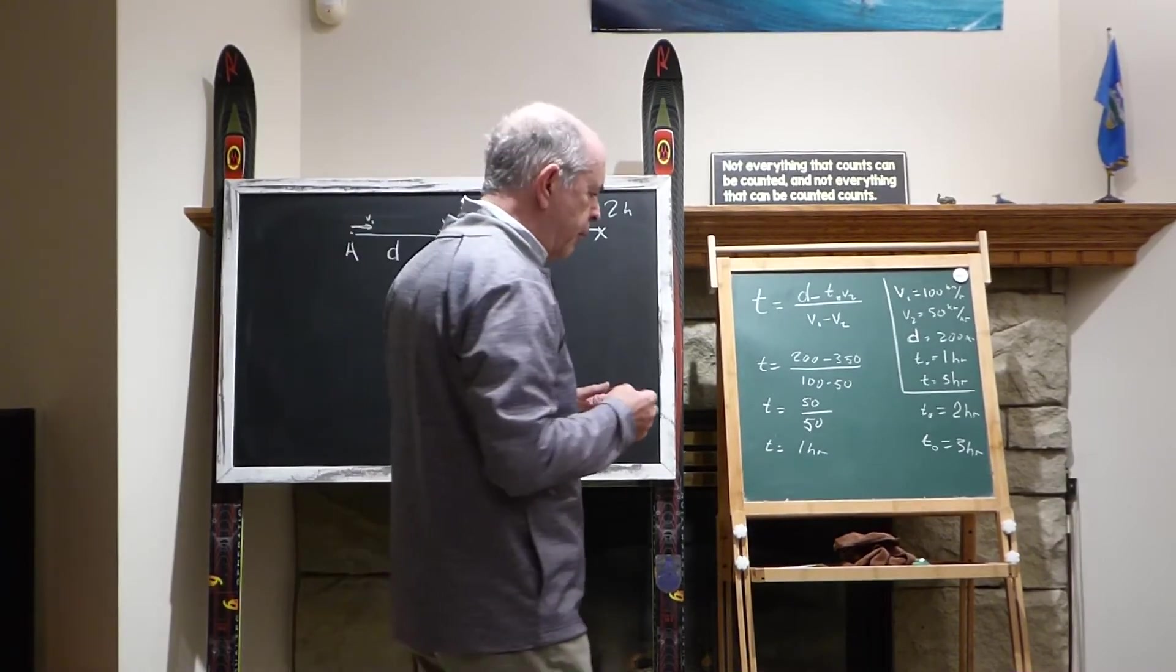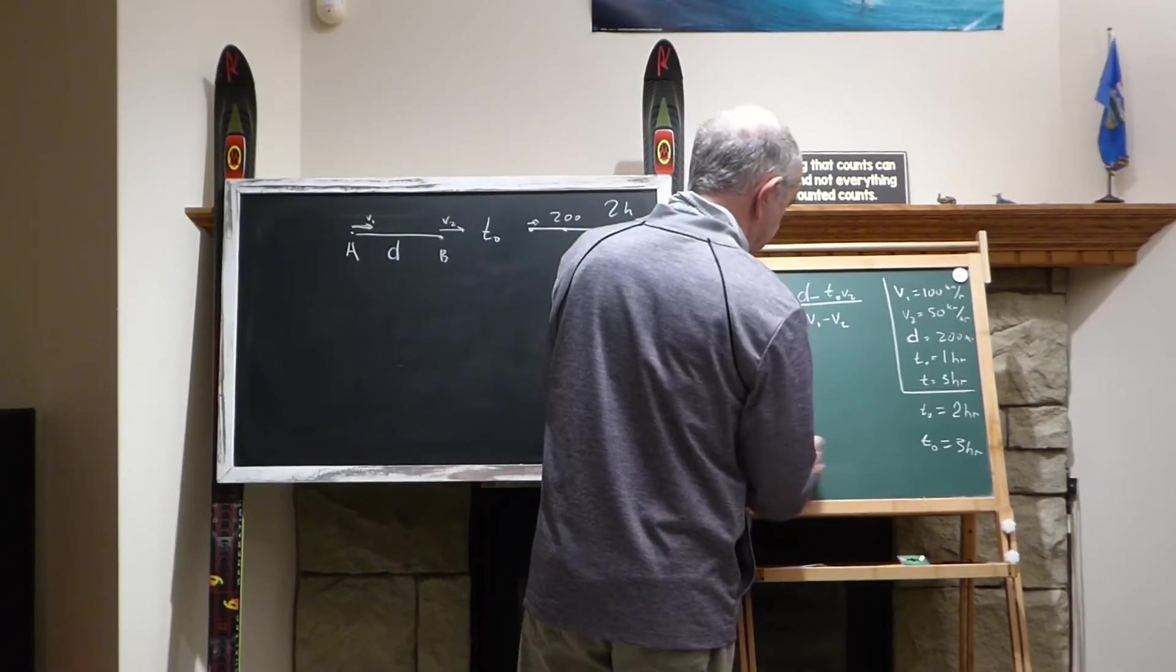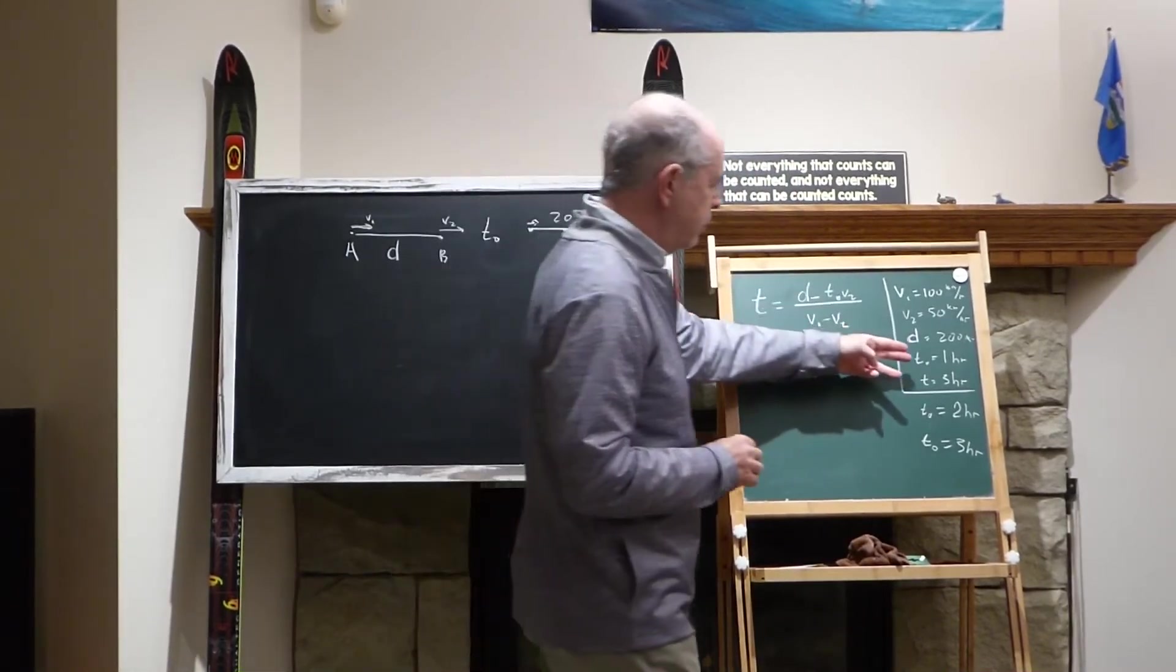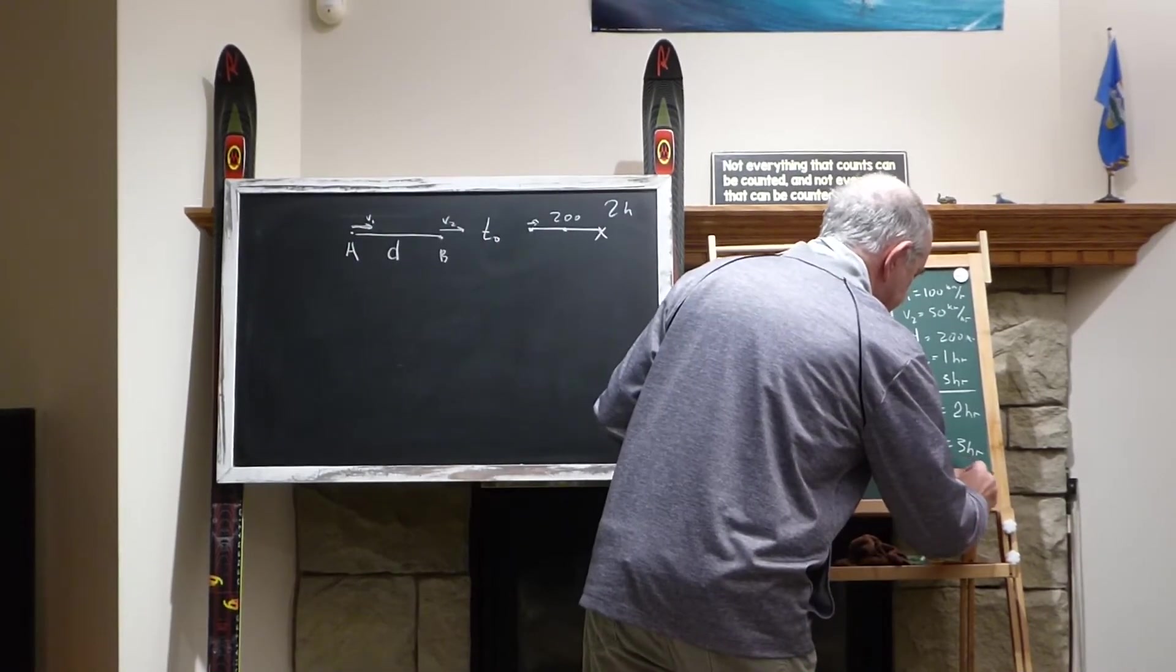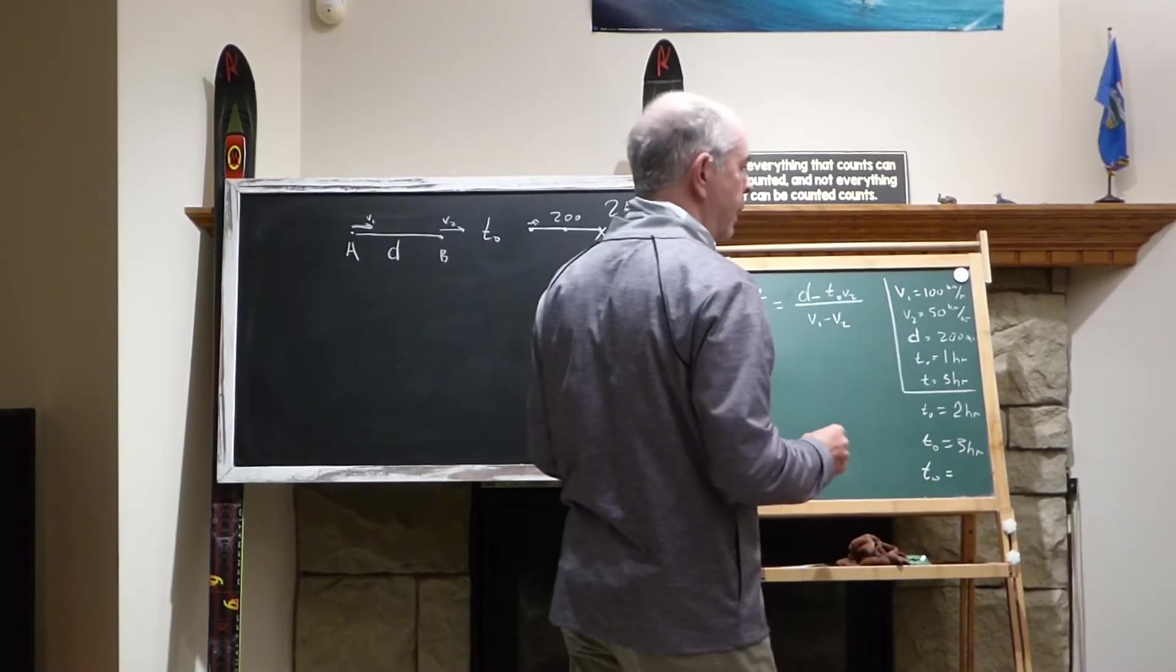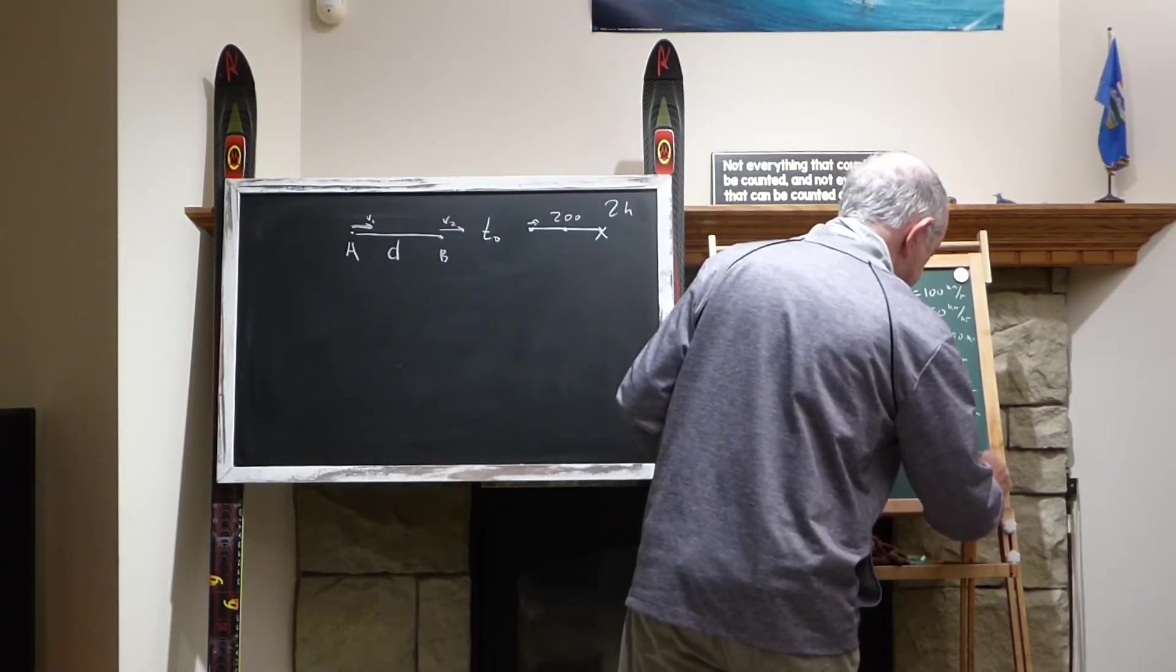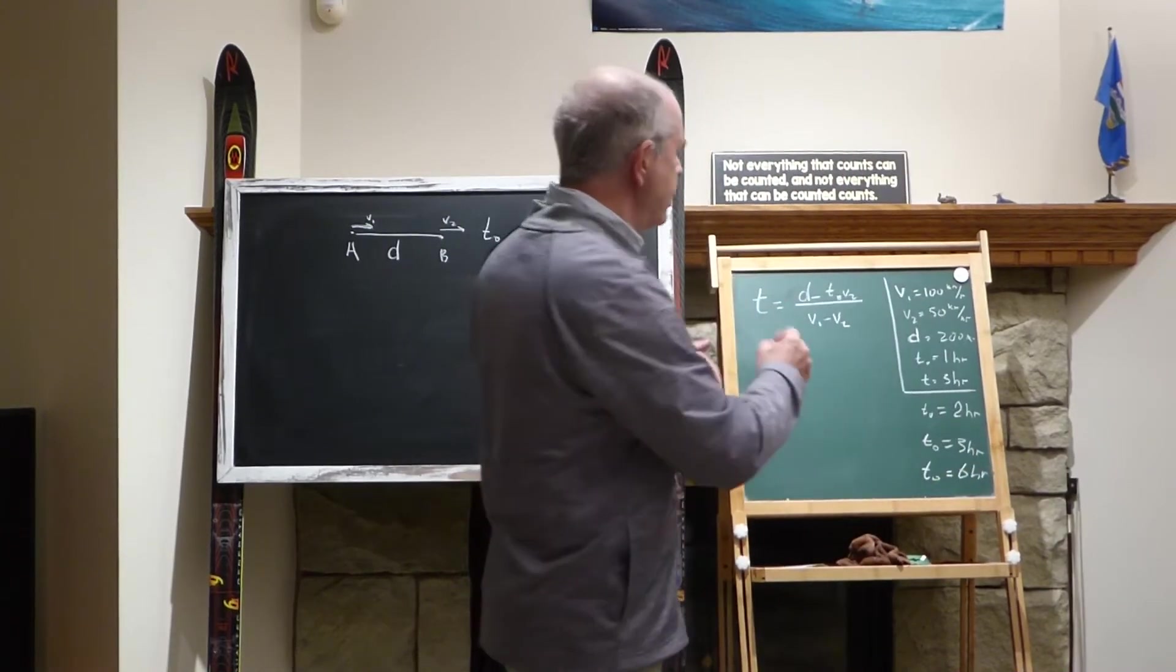What will happen, for example, if I put, I can continue increasing T0, and I put, let's say, T0, let's say, six hours.